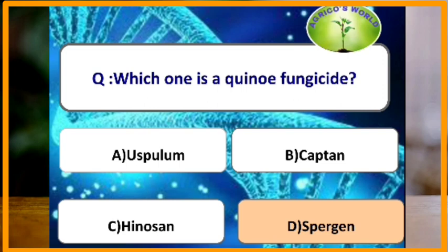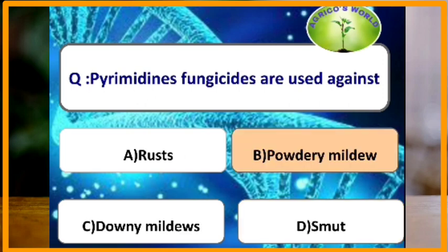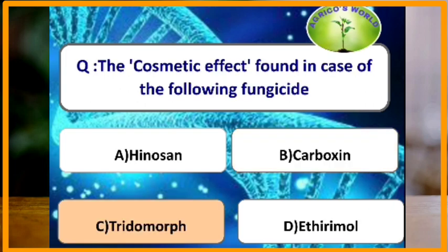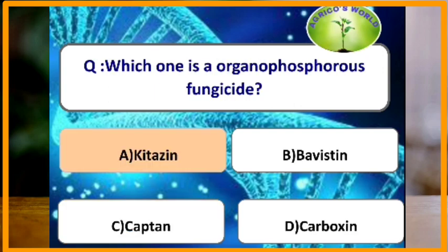Which one is a quinone fungicide? The quinone fungicide is Spergon. Pyrimidine fungicides are used against powdery mildew. The cosmetic effect is found in which fungicide? Tridemorph is the fungicide in which there is a cosmetic effect.